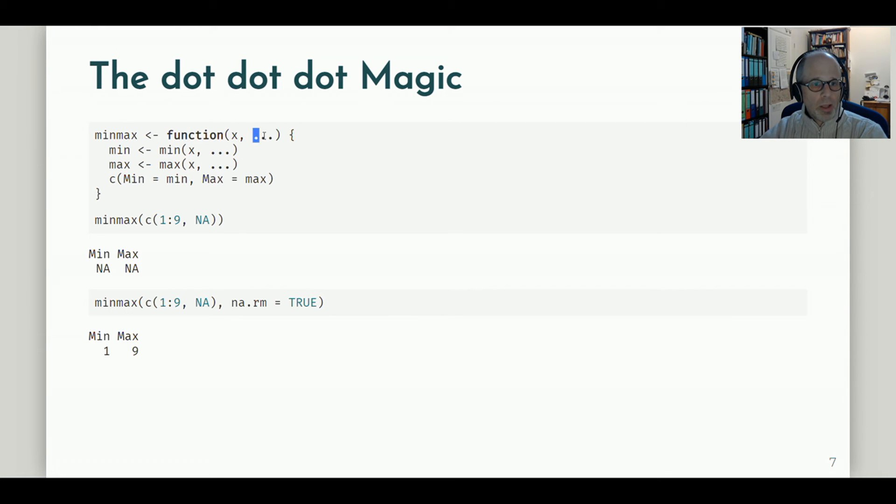So I can use that to pass on additional arguments to the functions that I use in my function body. So I make the dot dot dot an argument to my minmax function, and I pass the three dots to the min and the max function. So this is much shorter coding than on the previous slide, and I can use it the same way as before.